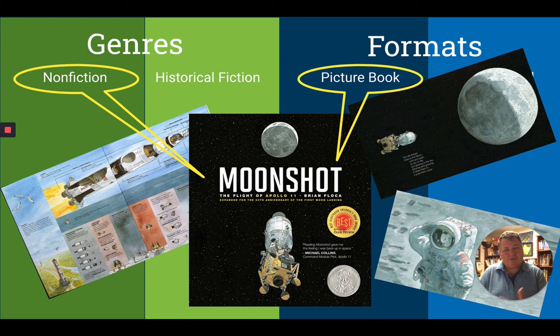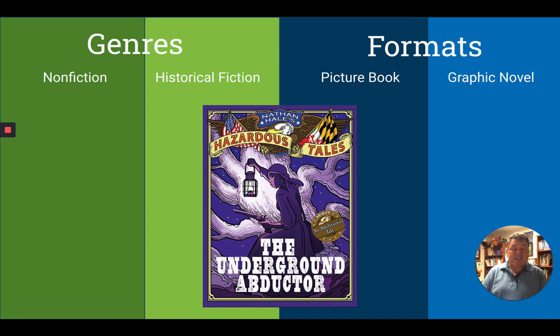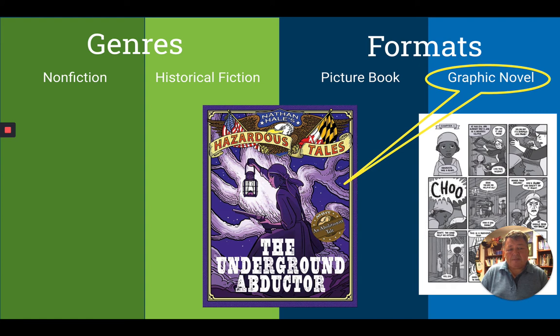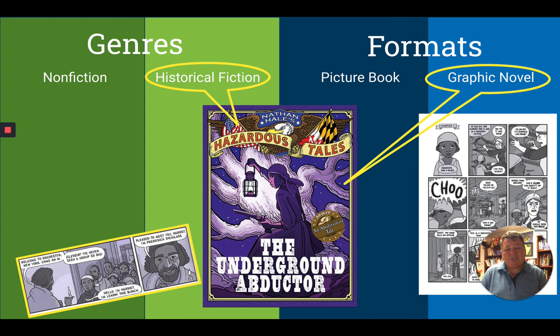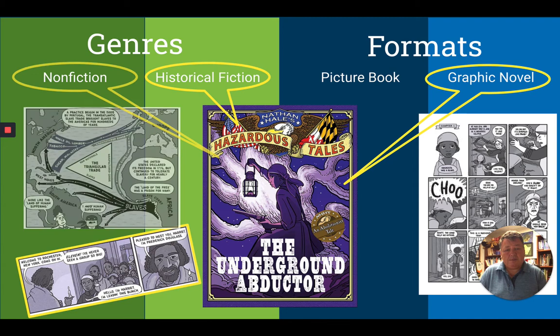This is from a series called Nathan Hale's Hazardous Tales — The Underground Abductor, about the Underground Railroad. It fits as a graphic novel and is historical fiction, because not all things that happen in it actually happened in real life. It's about Harriet Tubman, but the words and some situations are made up — fictional, yet based on a real person and historical event. It also contains facts about the slave trade and the triangular trade. So it fits multiple categories.